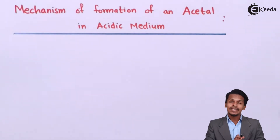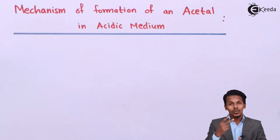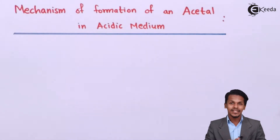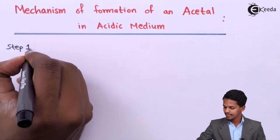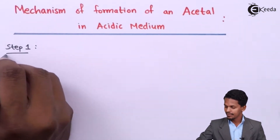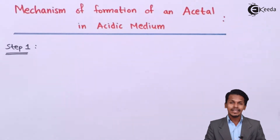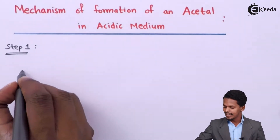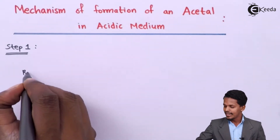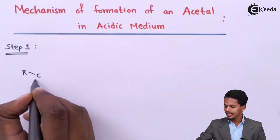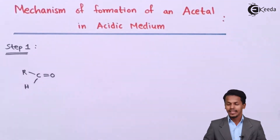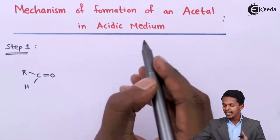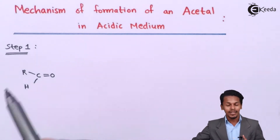The formation of an acetal is basically a two-step process that I am going to explain. Let us talk about the first step. Suppose we have an aldehyde, which can be represented as RCH double bond O. This reaction is carried out in an acidic medium.